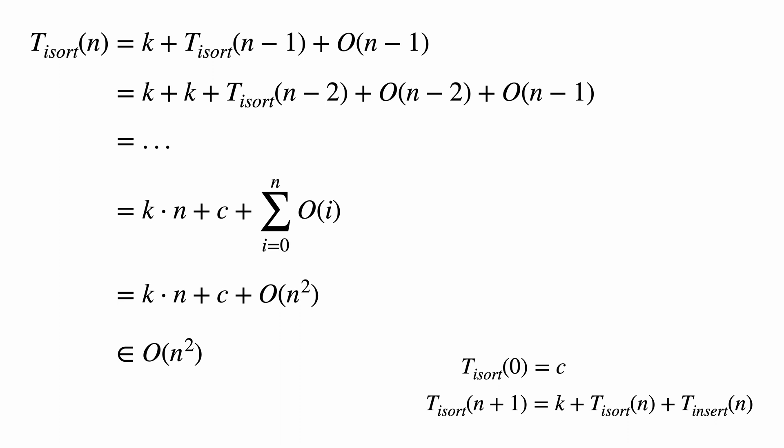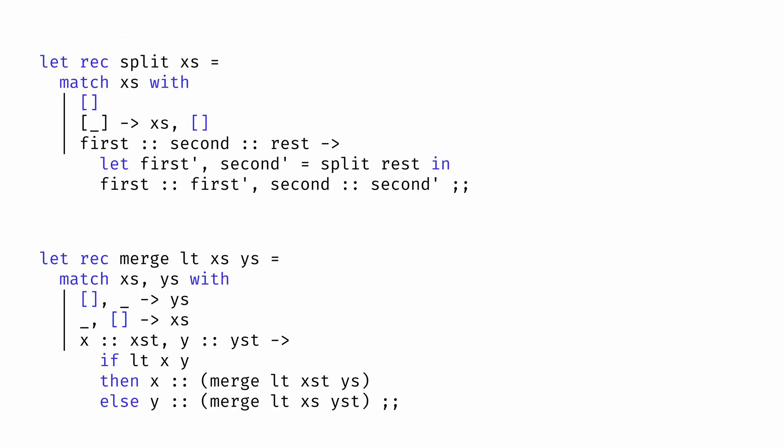What about the running time of merge sort? Merge sort relies on two helper functions: split, which takes a list and splits it into two lists, and merge, which takes two sorted lists and merges them into a new sorted list. Both of these functions are linear in the size of their arguments — in big O of n. You can apply the unfolding technique to demonstrate that for yourself.